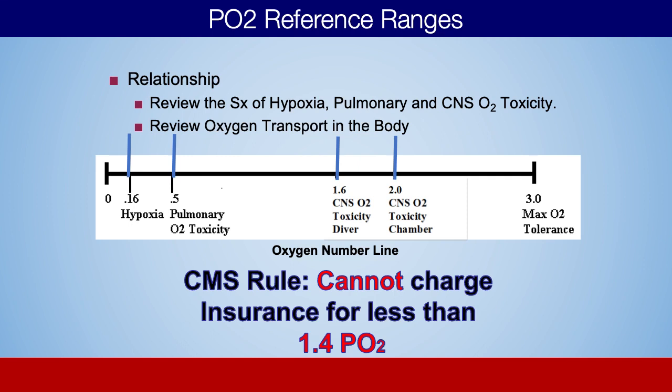At a PO2 of 3.0, that is human tolerance. We would never need or want to expose a human to higher levels than that. There are very few treatments — carbon monoxide poisoning being one of them — where this acute, life-saving event requires going to human tolerance. Other than that, almost all clinical treatments are done well below a PO2 of 3.0.